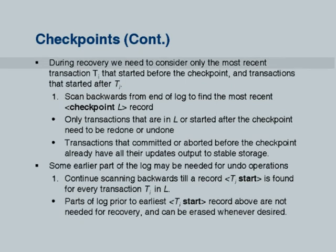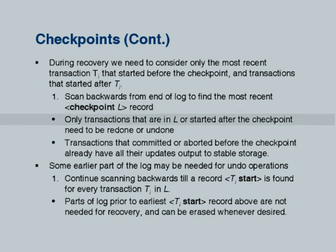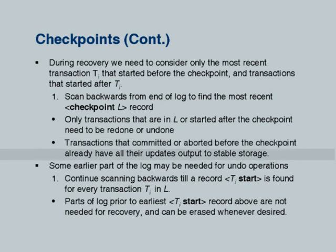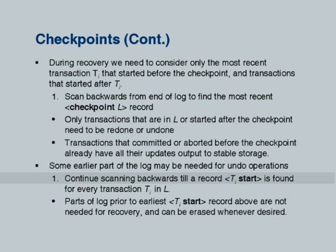During recovery, we can find the last checkpoint by scanning from the end of the log to find the last checkpoint record which has the list L. Only transactions that are in L or started later are potentially incomplete. If something is not in L but started before the checkpoint, it cannot be incomplete — it either committed or aborted and went away before the checkpoint. All transactions that committed or aborted before the checkpoint already have all their updates output to stable storage, so there is no need to redo operations for them.